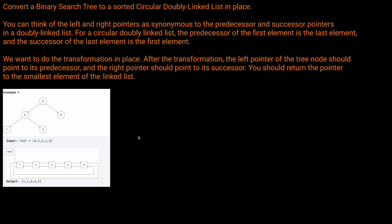So if we look at this tree — 4, 2, 5, 1, 3 — we should return 1, 2, 3, 4, 5, and then the 1 will be linked to the 5, and the 5 will be linked to the 1.